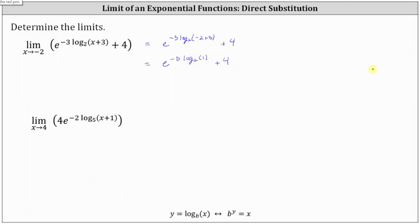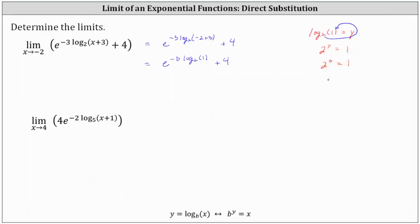Let's review why. If we have log base two of one, we set that equal to y and write the log equation as an exponential equation using the definition below. Remember, a logarithm is an exponent. The equivalent exponential equation is two to the power of y equals one. We recognize that two to the power of zero equals one, and therefore y equals zero, and y is log base two of one.